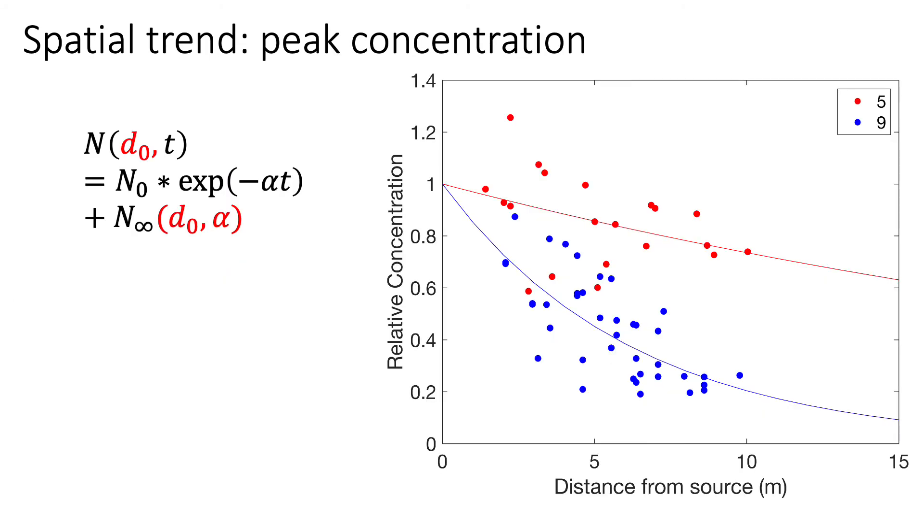When we explore that more closely, if we plot the relative concentration, where one represents the concentration at the source, to the distance from the source, as we go farther away, we see that the concentrations largely decay. This decay is independent of air exchange rate. At an air exchange rate of 5, we see some decay. At an air exchange rate of 9, we also see some decay. When you have a low air exchange rate, the decay is actually not very strong. As a matter of fact, even if you are about 10 meters away, the concentrations are still only about 70 or 80 percent of what would be close to the source.